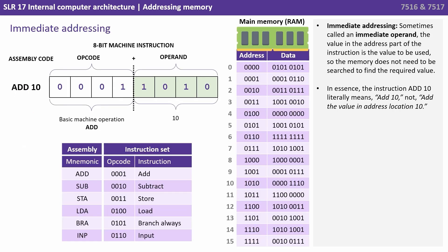So first let's look at immediate addressing, sometimes also called an immediate operand. In this case the value in the address part of the instruction is the value to be used, so the memory does not need to be searched to find the required value. In essence the instruction ADD 10 literally means add 10, not add the value in address location 10.